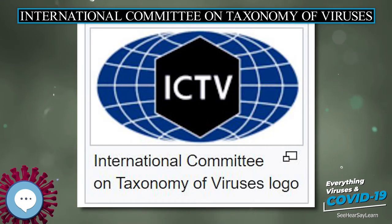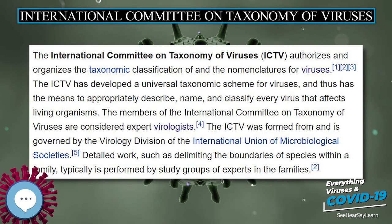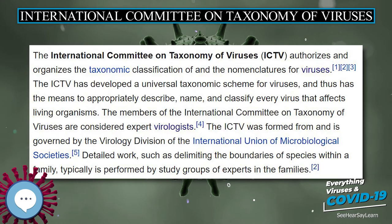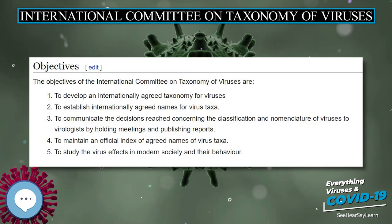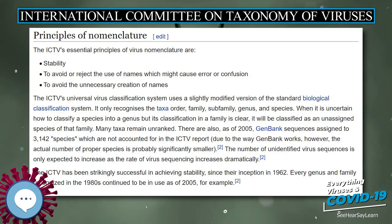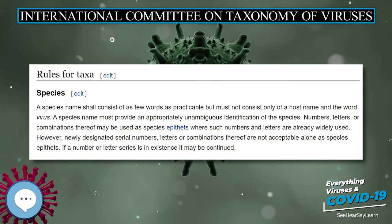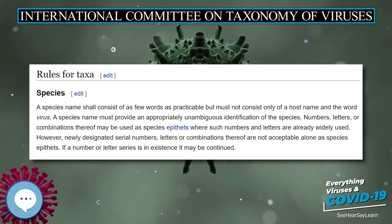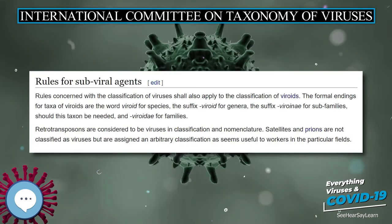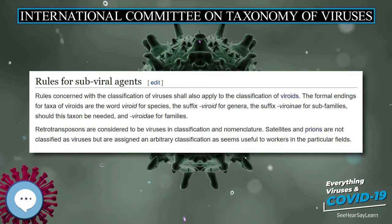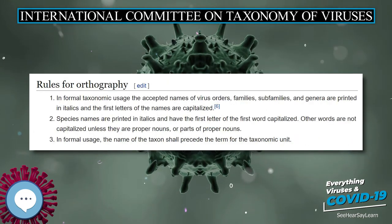Rules for taxa. A species name shall consist of as few words as practicable but must not consist only of a host name and the word virus. A species name must provide an appropriately unambiguous identification of the species. Numbers, letters, or combinations thereof may be used as species epithets where such numbers and letters are already widely used. However, newly designated serial numbers, letters, or combinations thereof are not acceptable alone as species epithets. If a number or letter series is in existence, it may be continued.